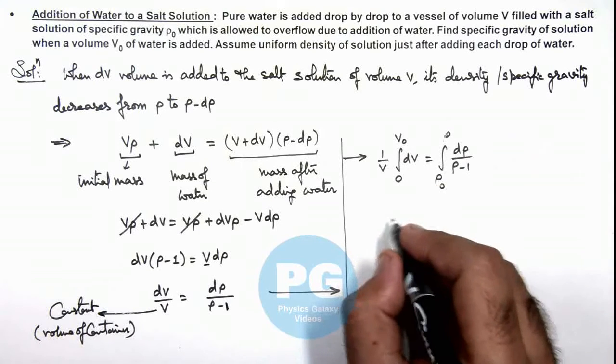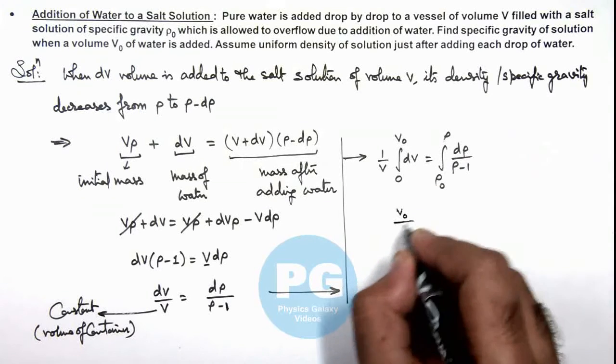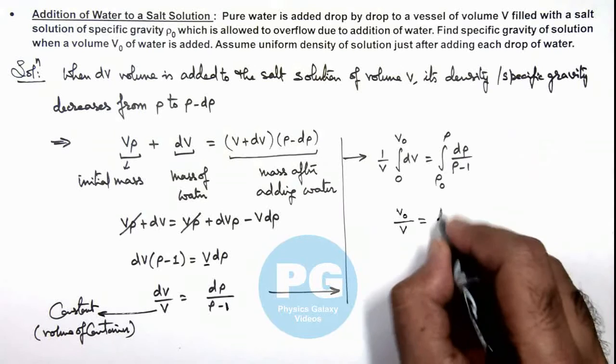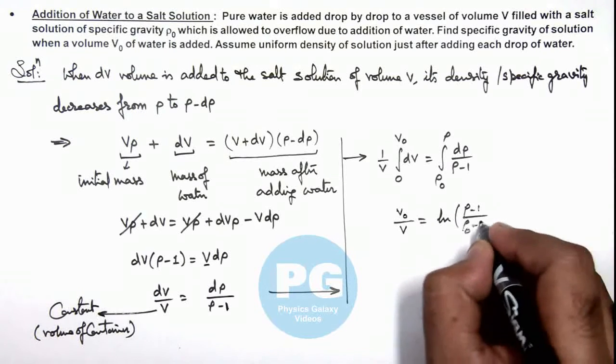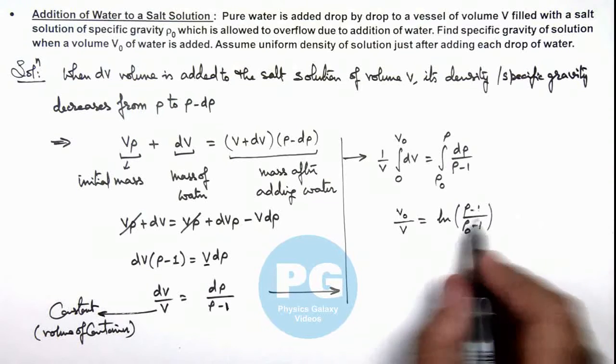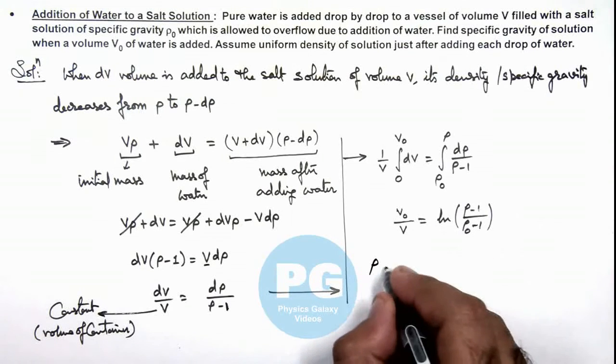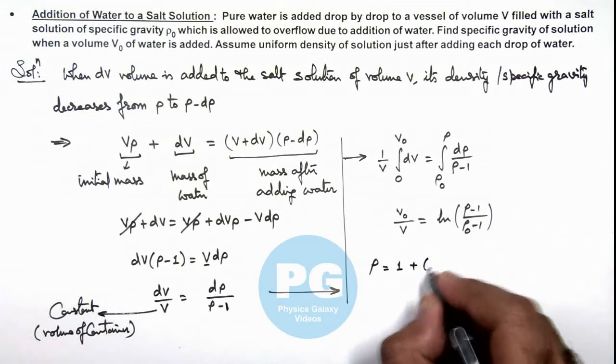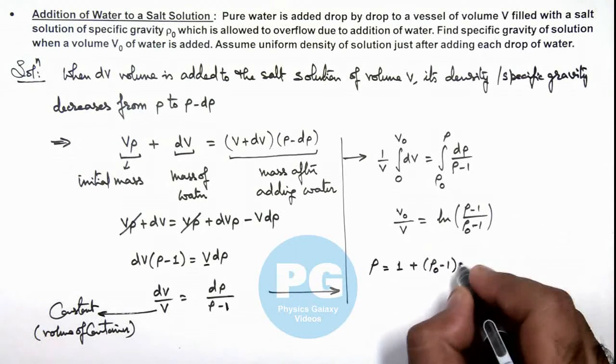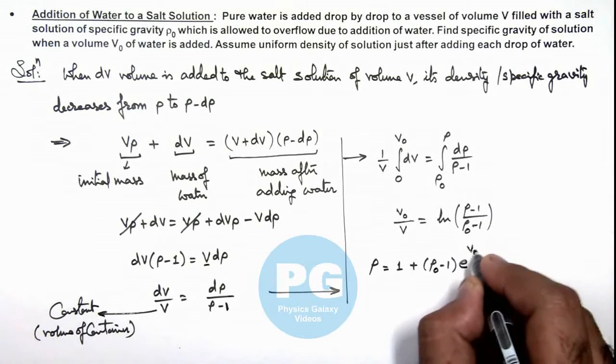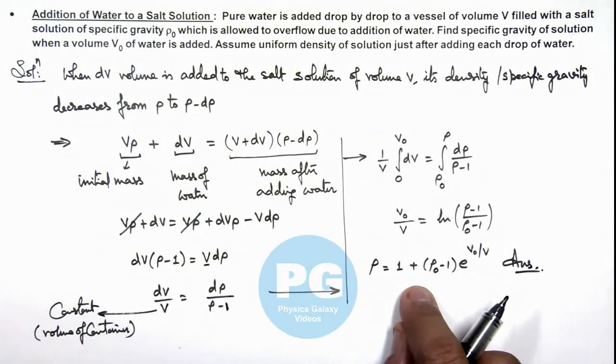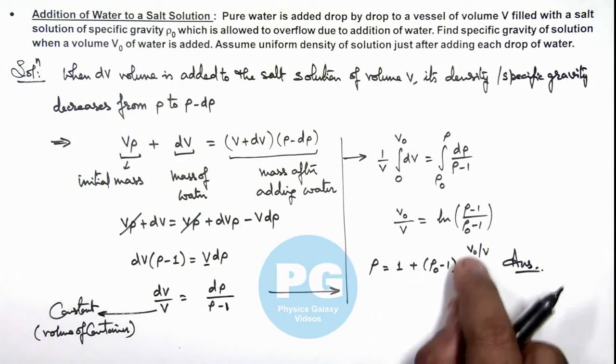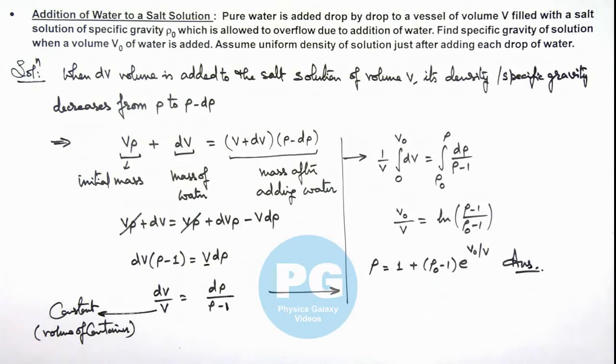So on integrating this becomes V₀/V is equal to ln of (ρ minus 1)/(ρ₀ minus 1). And if we simplify this relation, this gives the value of ρ is equal to 1 plus (ρ₀ minus 1)·e^(V₀/V). That is the result of this problem: the specific gravity of salt solution after a volume V₀ of water is added to it.